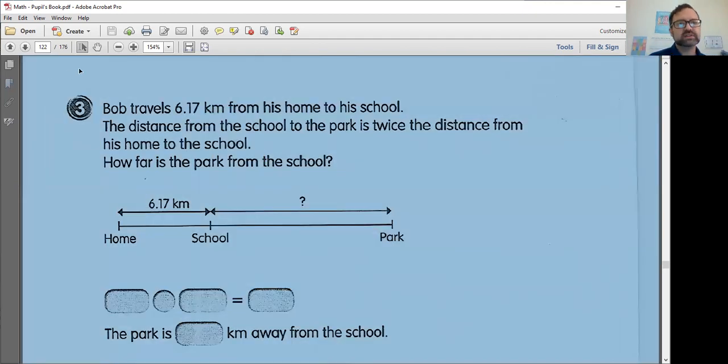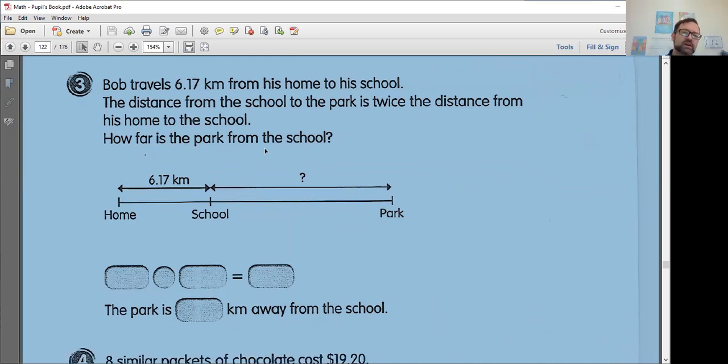Number three, Bob travels at 6.17 kilometers from his home to his school. The distance from the school to the park is twice the distance from his home to the school. How far the park is the park is the park from the school? So, let me go through and underline this information. We have 6.17 kilometers. And then this is a super important word here. It says the distance from the school to the park is twice the distance from his school from home to the school. So we know how much that is. And we know that this twice, meaning two times, the distance here. So what are we doing? This is a simple multiplication problem.